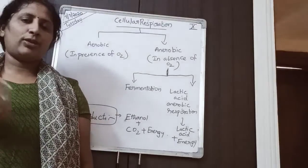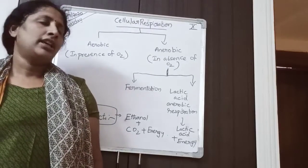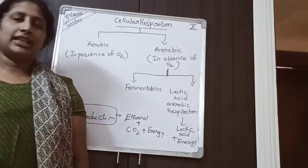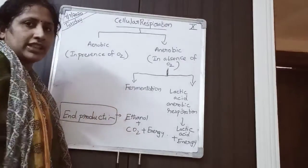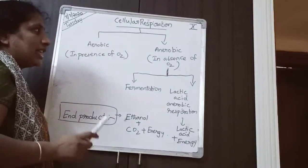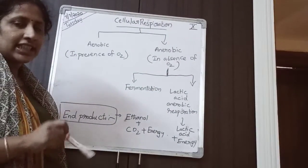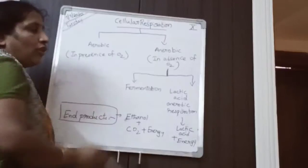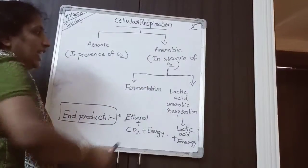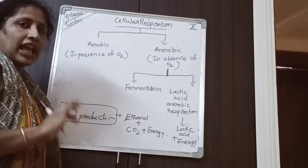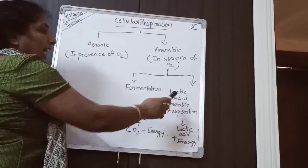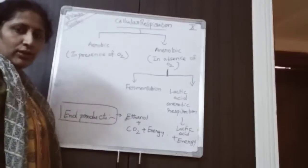Cellular respiration is of two types: aerobic and anaerobic. Aerobic respiration means the respiration occurs in the presence of oxygen. Anaerobic respiration means the respiration occurs in the absence of oxygen — oxygen is not present. Anaerobic respiration is again of two types: fermentation and lactic acid anaerobic respiration.